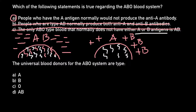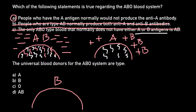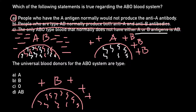Blood group A produces only anti-B antibodies. The next question asks: which is the universal blood donor for the ABO blood system? We already know the picture for blood group AB and blood group A. For blood group B, on the surface of the red blood cell we find surface protein B, and in the serum we would not find antibody B — instead we would find antibody A, so antibody A is present in the serum of blood group B.